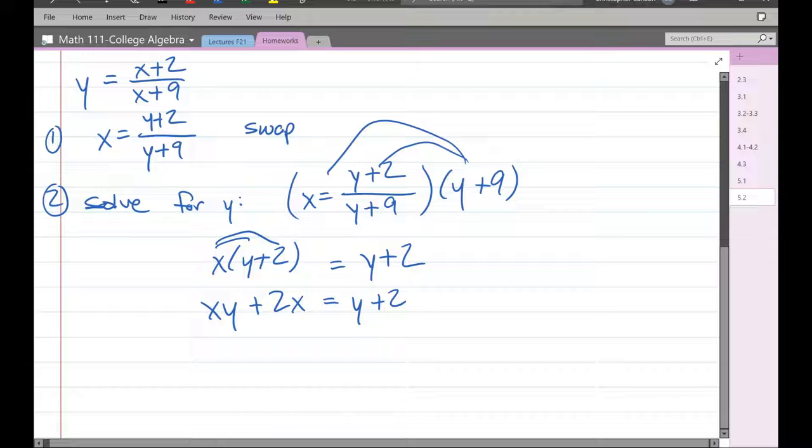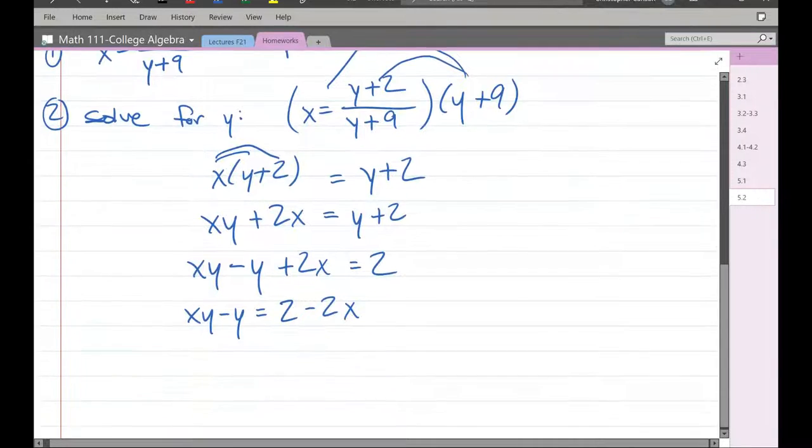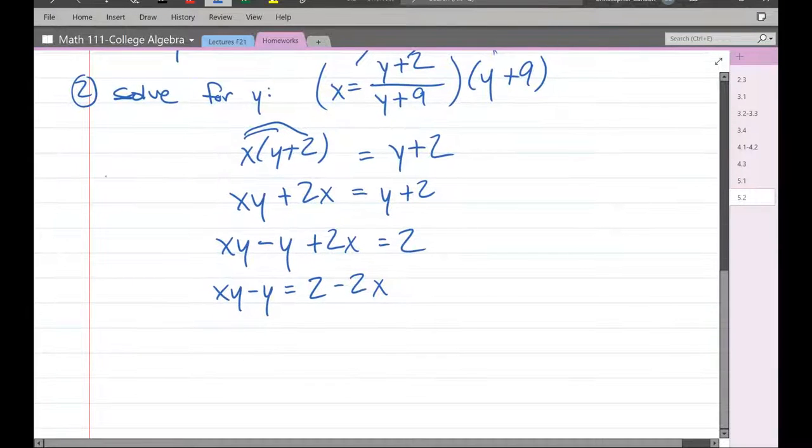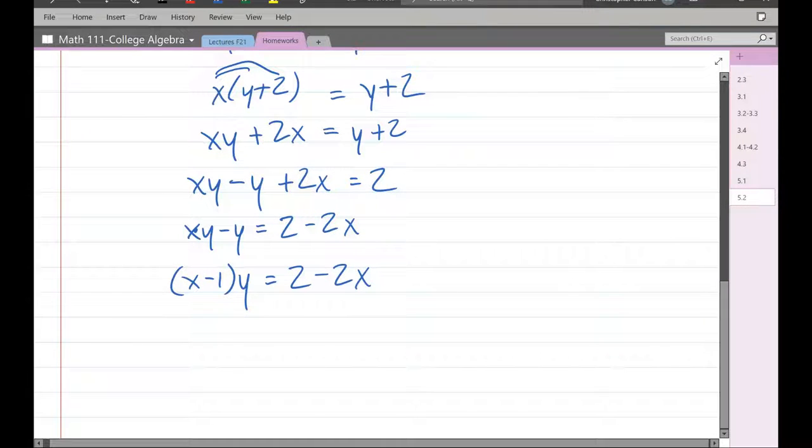Okay. Y appears twice. I want to get all the y's on one side. Let's go ahead and get the y's on the left side. I'm subtracting y on both sides. Now, I'm going to subtract 2x from both sides. All right. Almost there. What do we do next? Well, we have y appearing twice. How do we get that out of there? Remember, what you're looking at here is multiplication. And so we're going to factor an x minus one out of there. Could factor a two on the right side, but it's not really necessary.